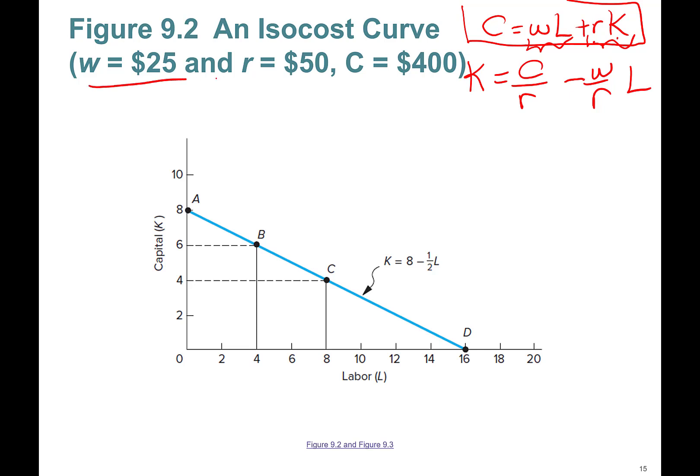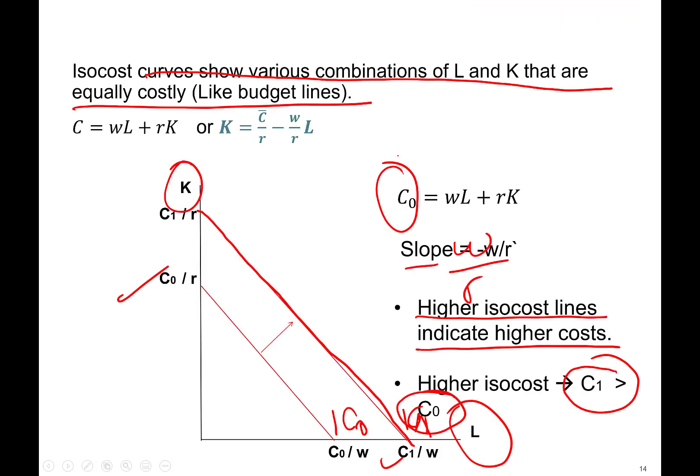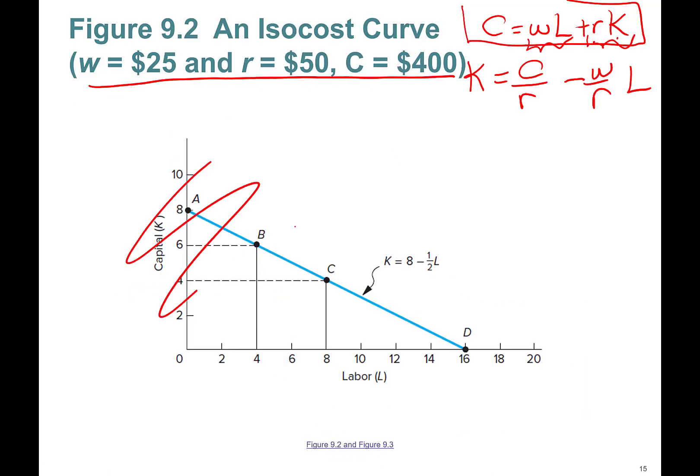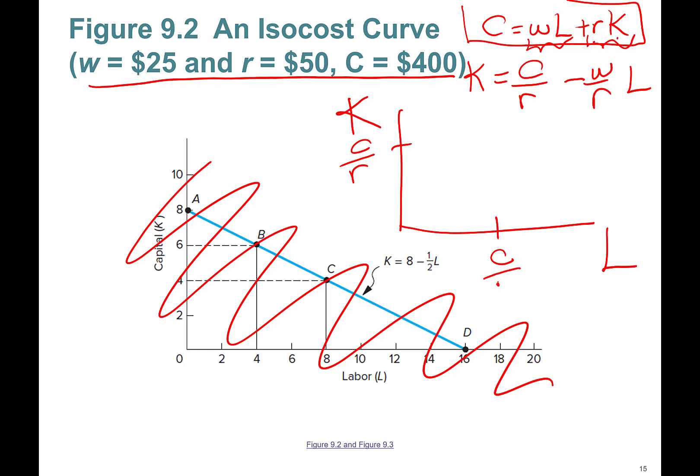All right, cool. So you might be given numbers, right? It's really easy. I don't even need this card. Let me see if I can—no, I can't get rid of it. But imagine that we are not given this. We can derive this ourselves. It's super easy. Okay, I can do this. I know this is going to be C over r. I know this is going to be C, cost over w. I know the slope of this guy is going to be negative w over r.